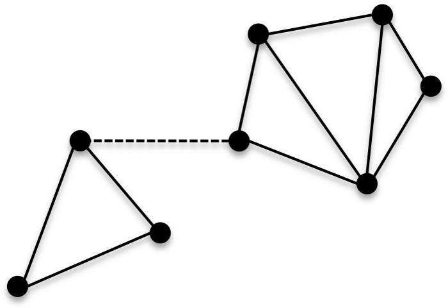The local connectivity κ(U,V) is the size of a smallest vertex cut separating U and V. Local connectivity is symmetric for undirected graphs, that is, κ(U,V) = κ(V,U). Moreover, except for complete graphs, κ(G) equals the minimum of κ(U,V) over all nonadjacent pairs of vertices U and V.